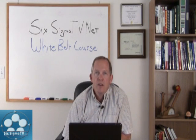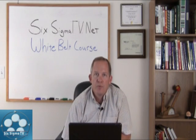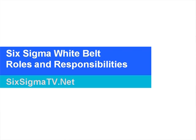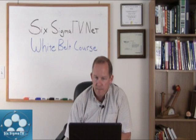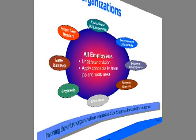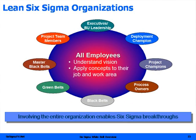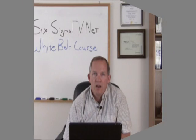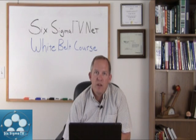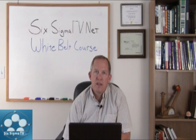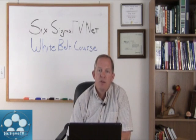Hello and welcome back to SixSigmaTV.net. In this module we'll talk about the roles and responsibilities of all employees and leaders within an organization that's deploying Lean Six Sigma. This first chart shows you a visual of how all the different people involved fit within an organization. In the center we have all employees — they need to understand the vision, apply the concepts to their job and work area. That's the purpose of this white belt or awareness training, so employees understand how this impacts them and how they can impact the success of this process and methodology and the overall strategy of the organization.